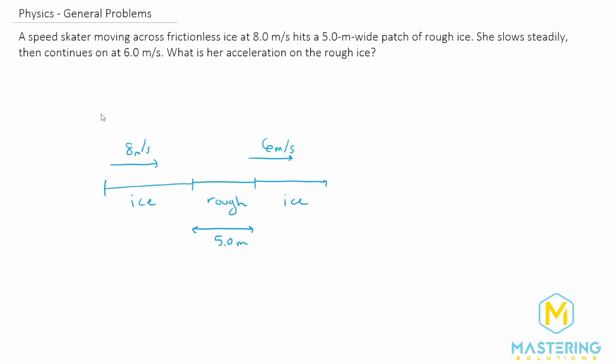So to draw those, the first one, the reason they say that it's frictionless is to indicate that she's going along at a constant speed so that friction isn't slowing her down, and assuming that she's not speeding up by skating faster. And then when we hit the rough section, the arrows are going to be getting shorter.